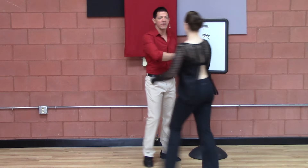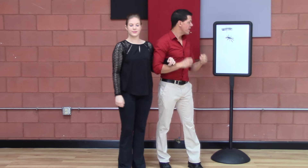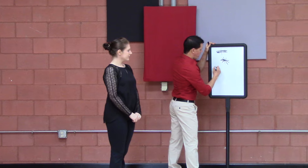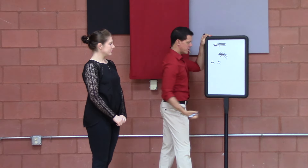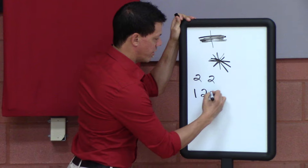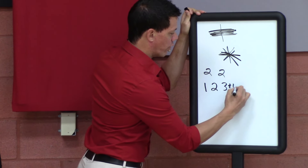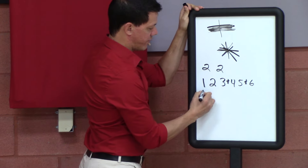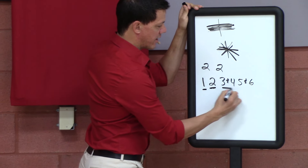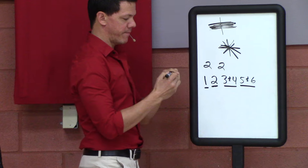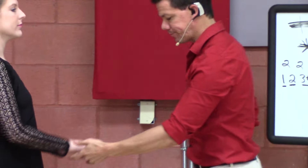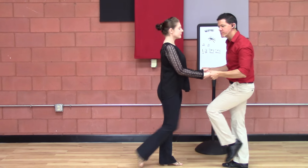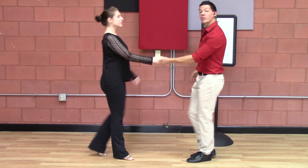Here's the confusing thing for a lot of us — the similarity between the two. They both use two walks and two triples. So they use the timing: one, two, three and four, five and six. So for West Coast Swing, I have two walks — walk, walk — then I have two triple steps: triple step and triple step.